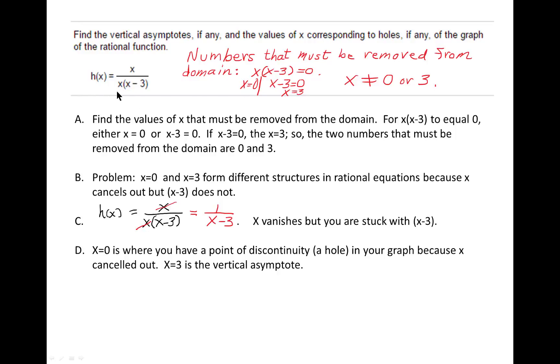We have to find the numbers that have to be taken out of the domain, so I take each factor of the denominator and set it equal to 0. x equals 0 and x minus 3 equals 0. What that gives us is the numbers 0 and 3 have to be taken out of the domain. Okay, so that's the first thing we do, is we find the numbers that have to be removed from the domain.